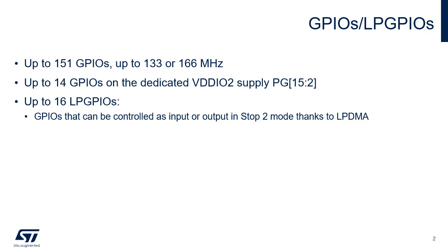VDD-IO2 is the external power supply for 14 input/outputs, Port G15 down to 2. The VDD-IO2 voltage level is independent of the VDD voltage and must preferably be connected to VDD when PG15-2 are not used. The LPGPIO allows dynamic input/output control in stop-2 mode thanks to low-power DMA. Up to 16 input/outputs can be configured as LPGPIOs.